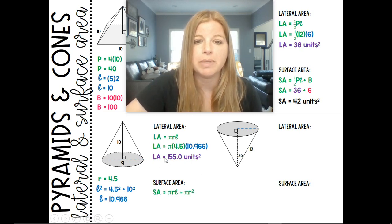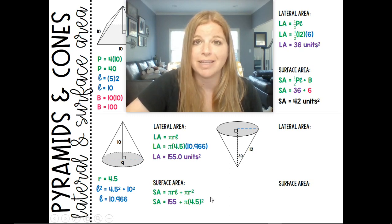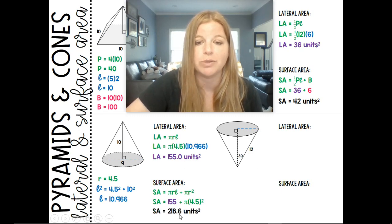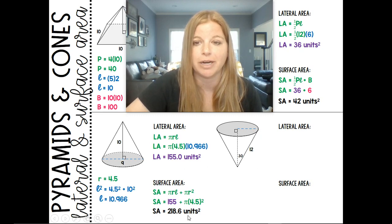Surface area would then be the area that I got here, 155, plus the area of the base, the circle. So I know my radius is 4.5. If I go ahead and let the calculator basically do all my work for me, do 4.5 squared times Pi plus that 155, I get 218.6 units squared.